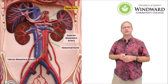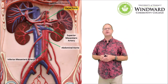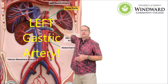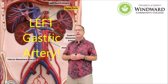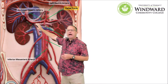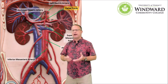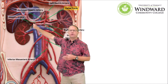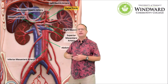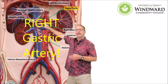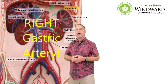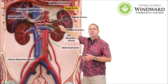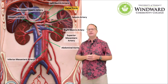Looking at the celiac trunk more closely: one of the first branches is the right gastric artery, which runs along the upper side of the stomach. We also see the common hepatic artery — common meaning before it branches — which gives rise to the hepatic artery proper going to the liver and the left gastric artery. Finally, the last branch of the celiac trunk is the splenic artery, going to the spleen and supplying it with oxygen-rich blood.